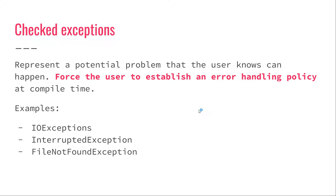To be more concrete, imagine that I have a bank account class and a withdraw method that withdraws money from my bank account. Maybe I'm aware that sometimes somebody can withdraw more money than they actually have in their bank account. Because I'm aware of this, I create a custom checked exception for when this special event happens, and then all the developers using my method are aware of this situation. They are forced to handle it in their code — there is no escaping this. Checked exceptions force the user to handle that exception at compile time. Common checked exceptions include everything related to input/output, like FileNotFoundException, and InterruptedException.